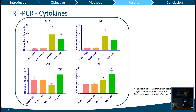To measure where the changes in permeability are coming from, we performed real-time PCR, first checking cytokines. In our CLP animals across both groups, we saw increased levels of interleukin-1 beta, interleukin-6, interleukin-12 in the CLP intestinal alkaline phosphatase group, and TNF-alpha. Interleukin-12 showed a significant increase with intestinal alkaline phosphatase treatment compared to the vehicle CLP control group, and TNF-alpha showed a near-significant increase in the intestinal alkaline phosphatase group.